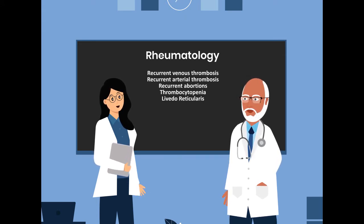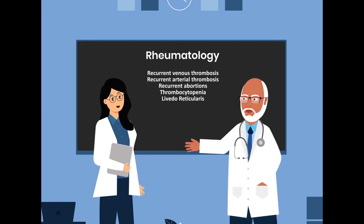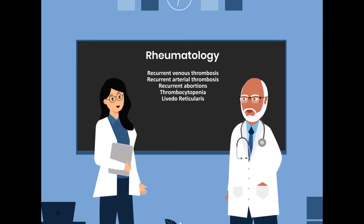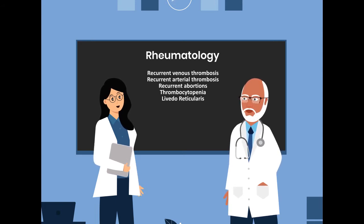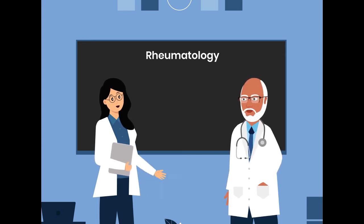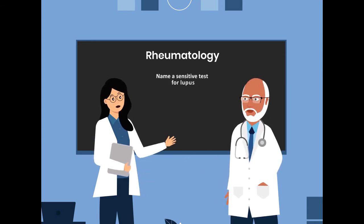What are some of the manifestations of antiphospholipid antibody syndrome? Some of the manifestations of antiphospholipid antibody syndrome are recurrent venous thrombosis, recurrent arterial thrombosis, recurrent abortions, thrombocytopenia, and livedo reticularis.